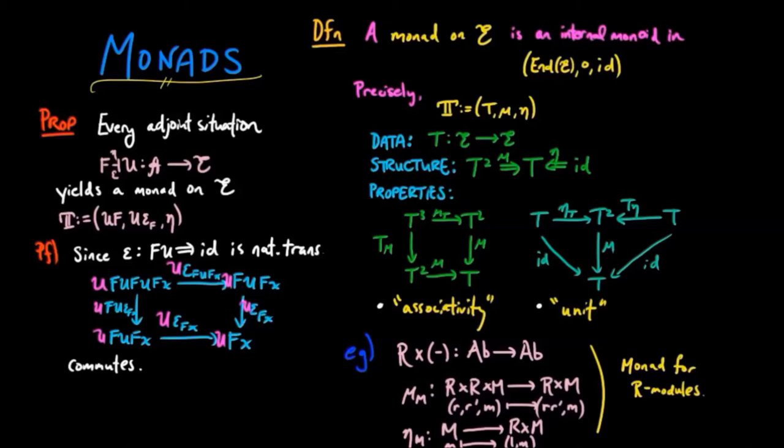But this diagram is nothing other than the associativity law since UF is our functor T. And so we see that we have T cubed going to T in two different ways. And these two different ways are exactly the morphisms that are involved in the associativity square. So we see that our associativity law is satisfied.